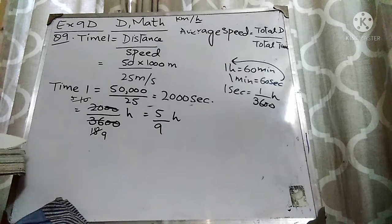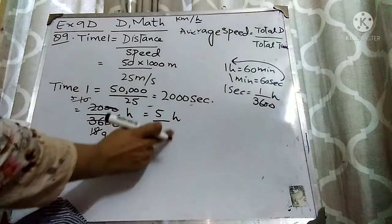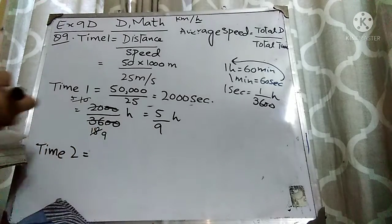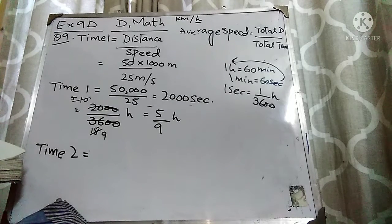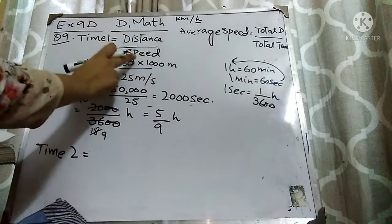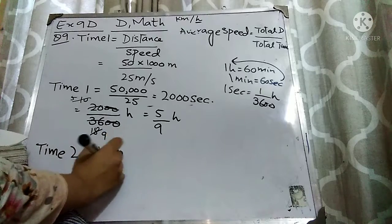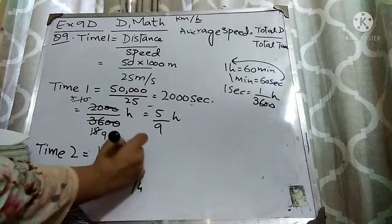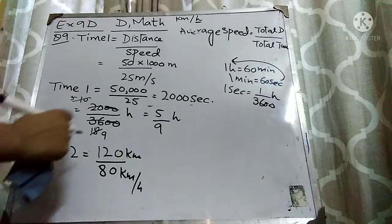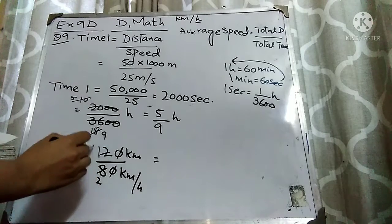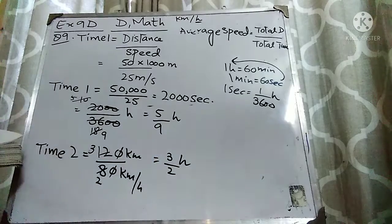Now let's find Time 2. It is written that the next 120 km at an average speed of 80 km per hour. Distance and speed are given, so I can find the time using the same formula: distance divided by speed. The distance is 120 km and the speed is 80 km per hour — units already match, so no conversion needed. When I divide 120 by 80, I get 3 over 2 hours. So Time 2 is 3/2 hours.